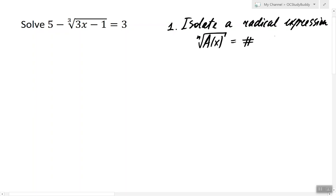Now if you have an even index and the number or expression on the right side is negative, then we immediately conclude that there are no solutions.